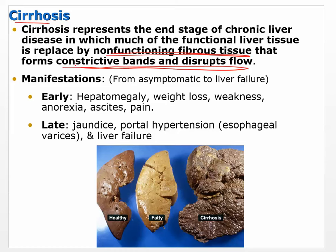Manifestations range from asymptomatic to liver failure. Early on: enlarged liver, weight loss, weakness, anorexia, ascites, and pain. These can come from different processes — anemia because the liver isn't able to make certain factors that cause blood cells to be made, or issues with thrombocytes and platelets. The liver produces so many proteins necessary for other body processes. In later stages with more liver damage: jaundice, portal hypertension, and liver failure.